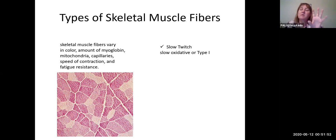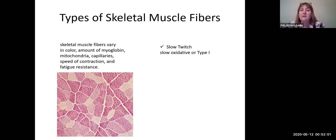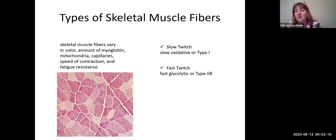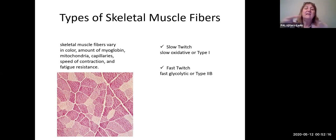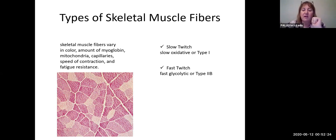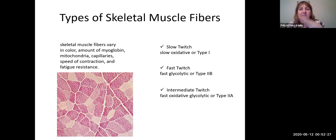The first group is known as slow oxidative, or Type 1 — I'll just be referring to them as slow twitch. The polar opposite are fast twitch, whose official name is fast glycolytic or Type 2b fiber. You need to learn both the names and the numbers. In between slow oxidative and fast glycolytic is a fiber type with characteristics of both, called fast oxidative glycolytic or Type 2a — I'll be calling those intermediate twitch.